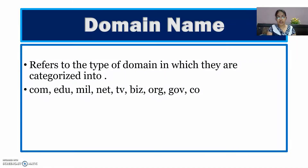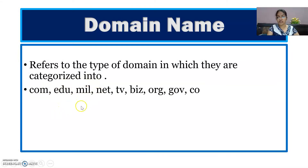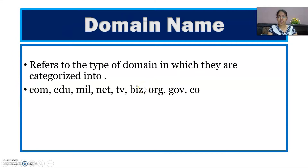Next is the domain name. All our domain names fall into categories such as .com, .edu, and others. .com is for commercial purposes, .edu for educational purposes, .mil for military, .net for network resources, .tv for television, .biz for business, .org for organization, and .gov for government.